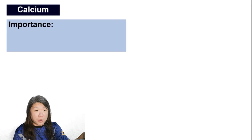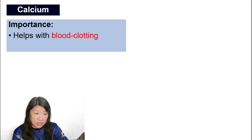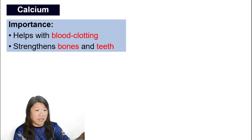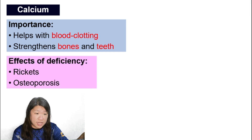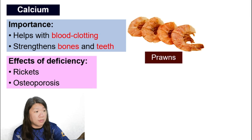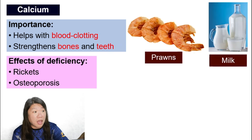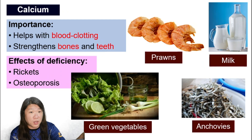Calcium is important for blood clotting and strengthening bones and teeth. Not having enough calcium can cause rickets and osteoporosis. Sources of calcium include prawns, milk, green vegetables, and anchovies — known as ikan bilis.